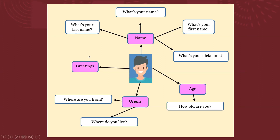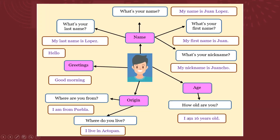Ahora bien, cuando hablamos de la edad, la pregunta sería 'How old are you?' Aquí estamos hablando de WH questions. Si yo quiero preguntarte tu edad, te voy a decir 'How old are you?' La respuesta siempre va a ser con el verb to be — no es la traducción tal cual de 'yo tengo', que sería el verbo have: 'I have 16 years old', sino 'I am.' En inglés siempre vamos a utilizar el verb to be: 'I am 16 years old.'